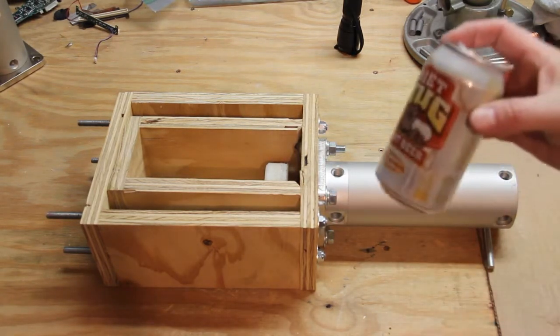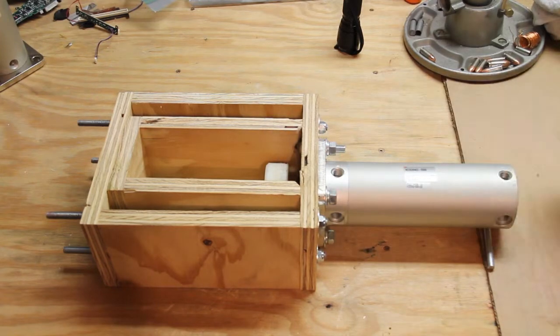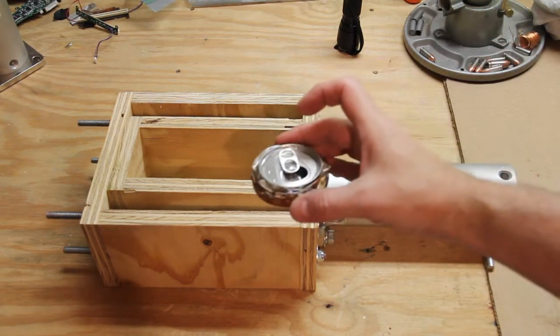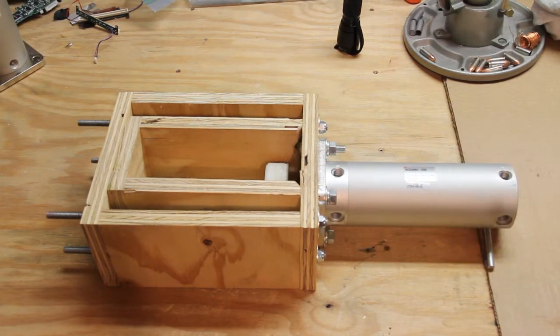The object is to take an aluminum can like you see here and basically turn it into something like this. That's about 1/6th to 1/7th of the original volume of the can.